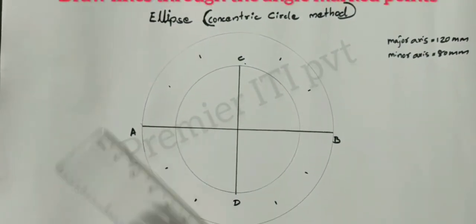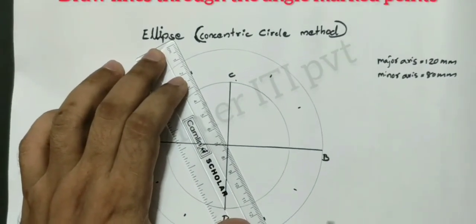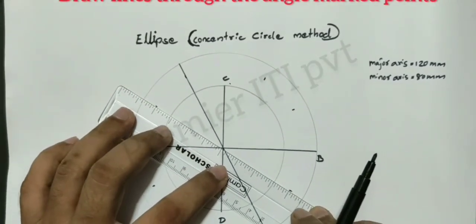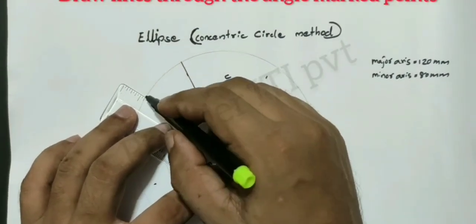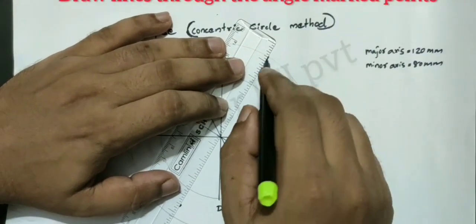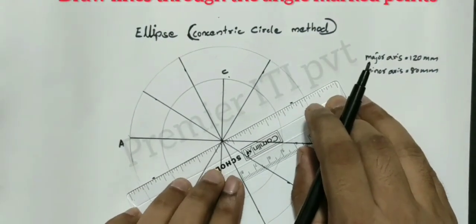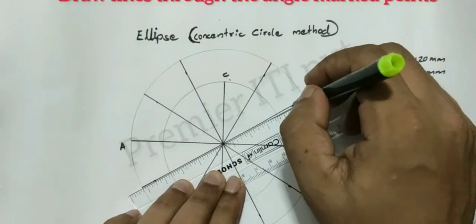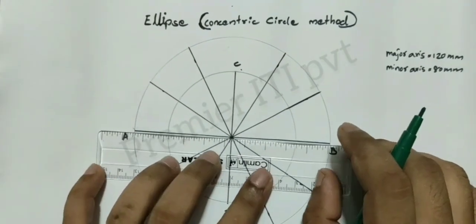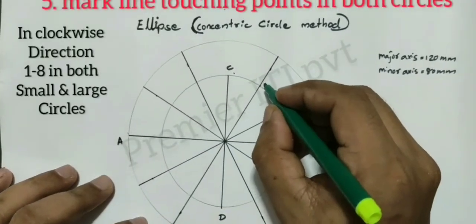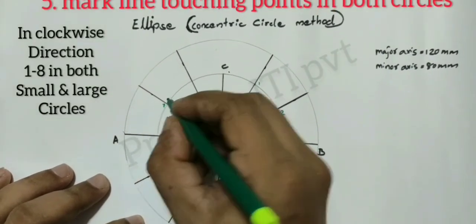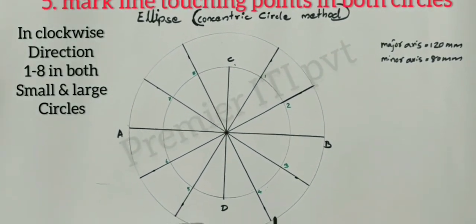This is what we have to do with the lines of the circle. We have two lines of the circle. These are the four lines of the circle, and these lines intersect the two circles. When you touch these points, you can see the same points on one circle.